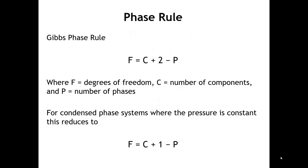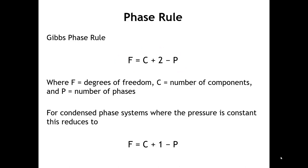So let's start with the Gibbs phase rule, which is stated here. The Gibbs phase rule tells us that the degrees of freedom — that is, the number of variables that we can change and keep the same mixture — is equal to C, the number of components, plus 2, minus P, the number of phases.